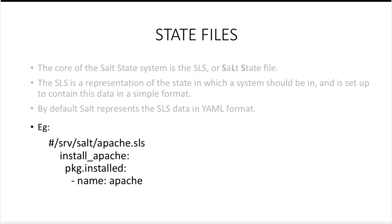So package.installed will install a given package on the salt minion. Next, we are giving an argument 'name: apache', which is the name of the package we want to install. So if we run this apache.sls file on a particular minion, the apache package would be installed on that minion. Also, much like pillars, we can specify what state files belong to what minions, so we can have a certain group of minions having access to only particular state files.